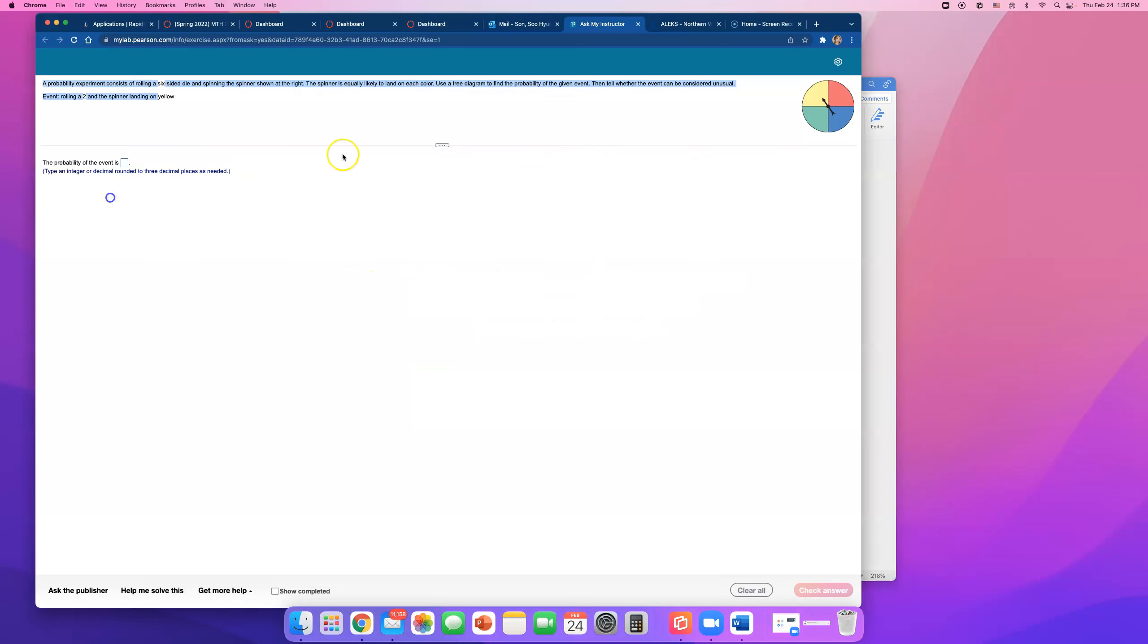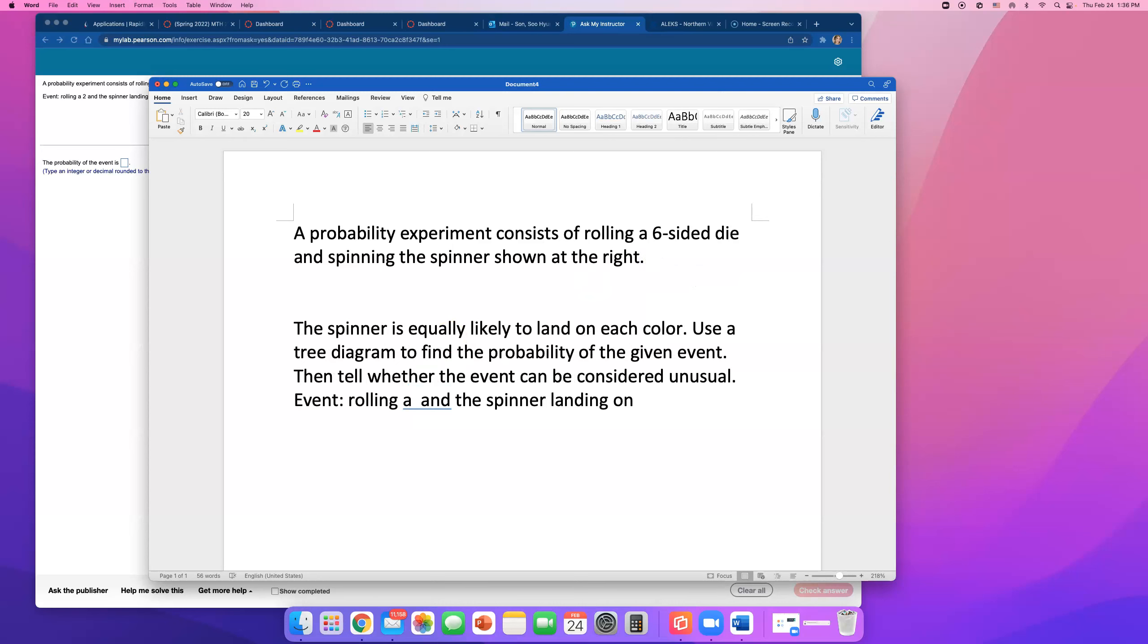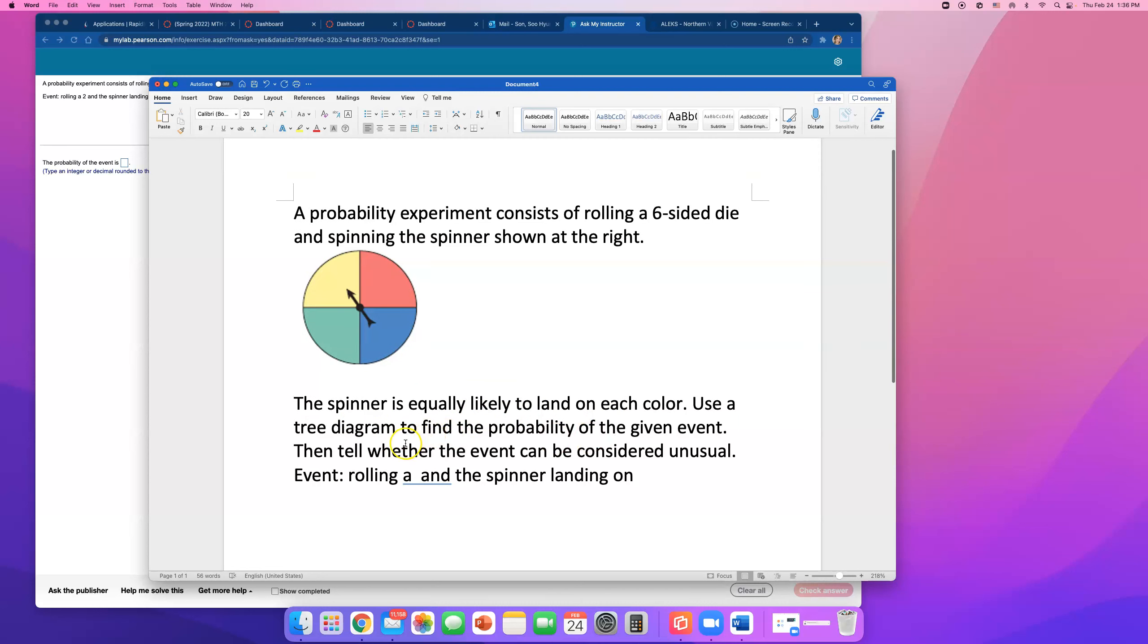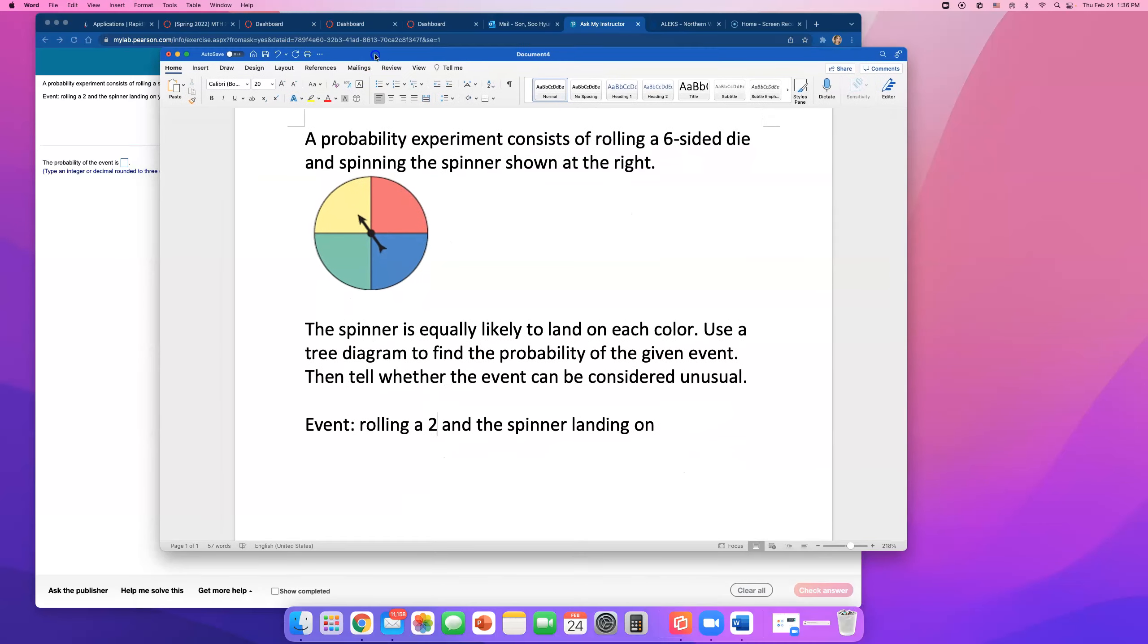Okay, I'm gonna copy this spinner too. So I can see the spinner has four different colors, so the probability of landing on one color is 1 out of 4, right? The spinner is equally likely to land on each color. Use a tree diagram to find the probability of the given event, then tell whether the event can be considered unusual. Event: rolling a 2 and the spinner landing on yellow.